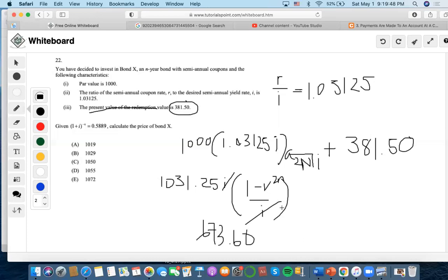Now we're going to add these two. So 673.60 plus 381.50, so it will be 1055.1.